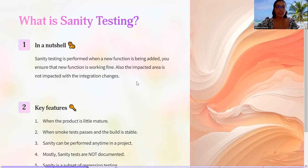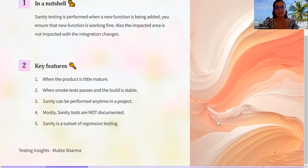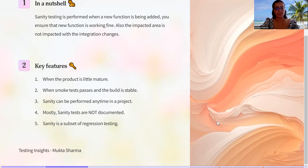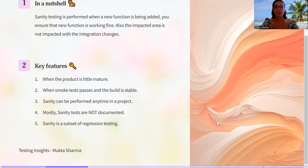What are the key features of sanity testing? When the product is a little mature, when the smoke test passes and you verify that the build is stable, then to continue further testing, you do sanity testing. Sanity can be performed anytime in a project. Sanity testing is mostly not documented — it depends upon your experience with the app and your skill set. If you are aware of the application functionality, you check the core functionality in the app and then show some confidence in the system.